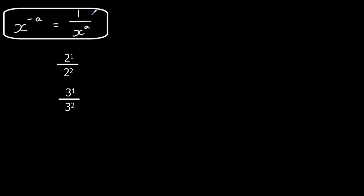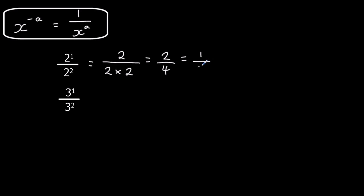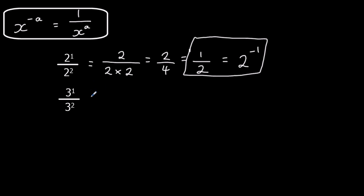Second rule: a minus power means one over, or it means flip over. We've got two to the power of one divided by two squared, so that means two divided by two times two, which is two over four. That simplifies to one half. And if you follow the rules of indices, two to the power of one divided by two to the power of two — take away the powers, one take away two — gives two to the power of minus one.